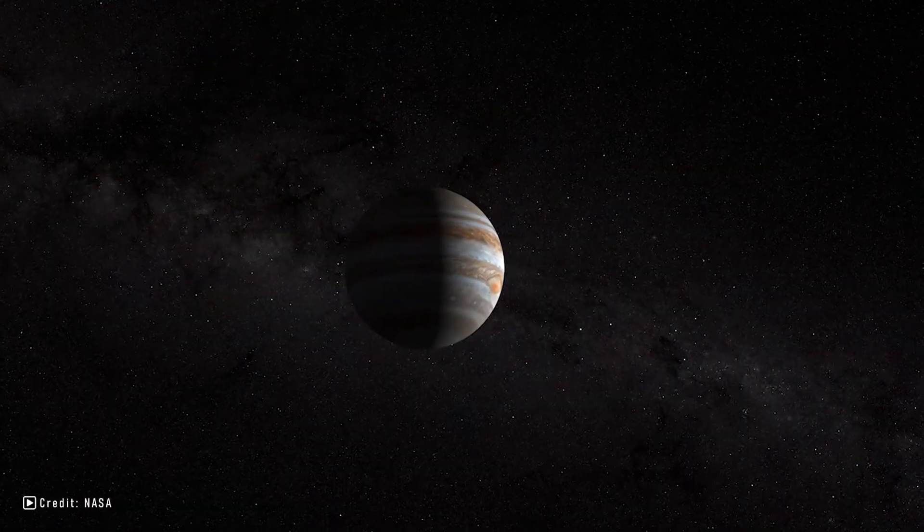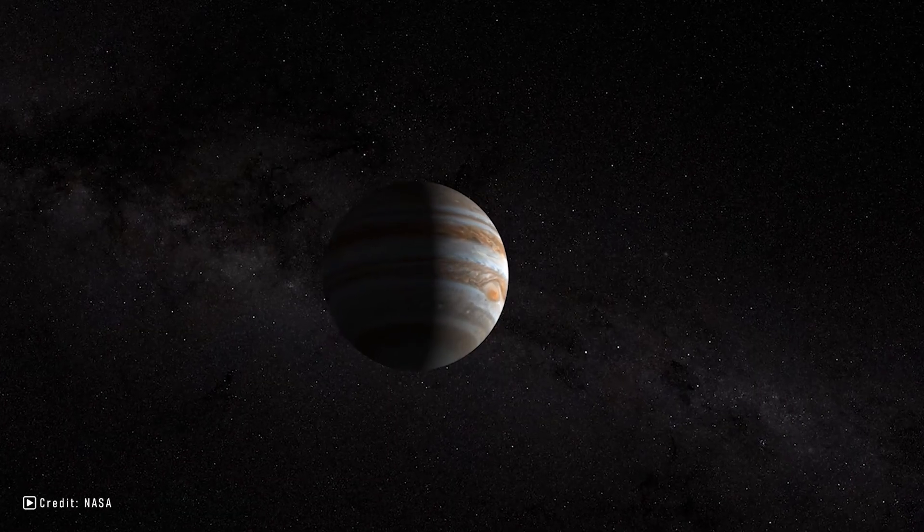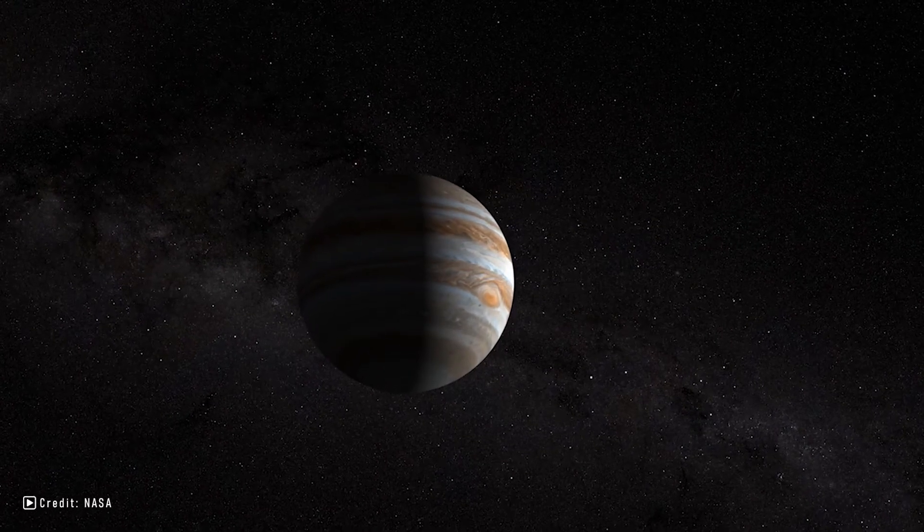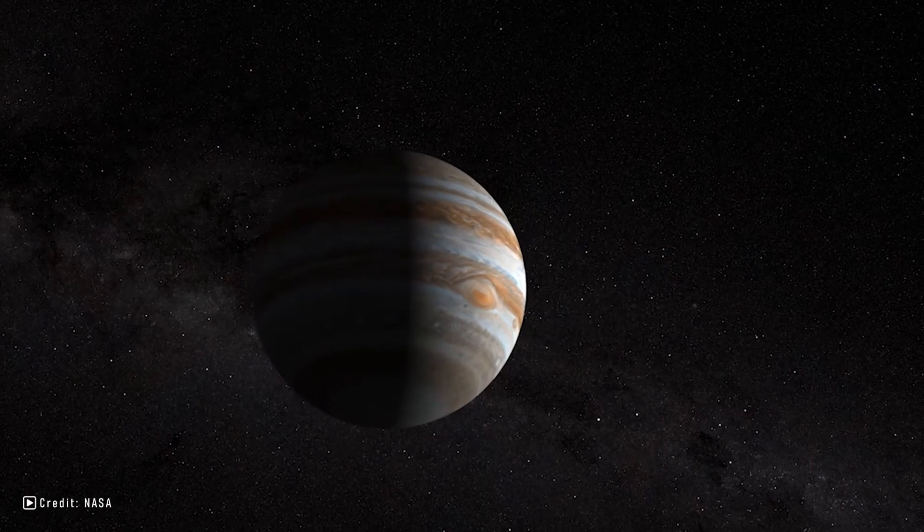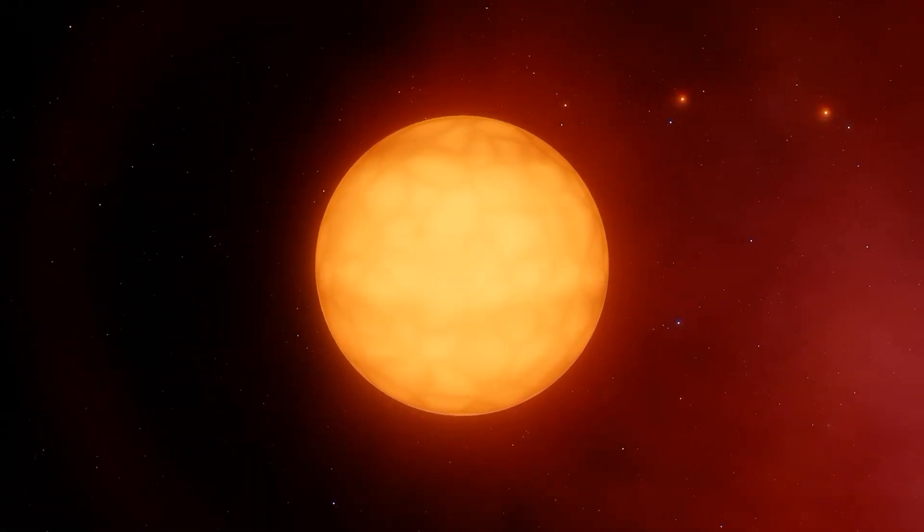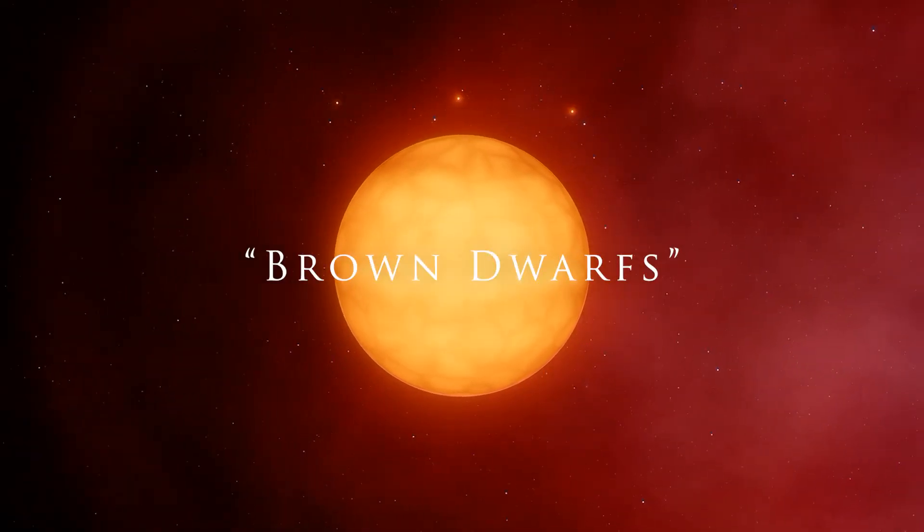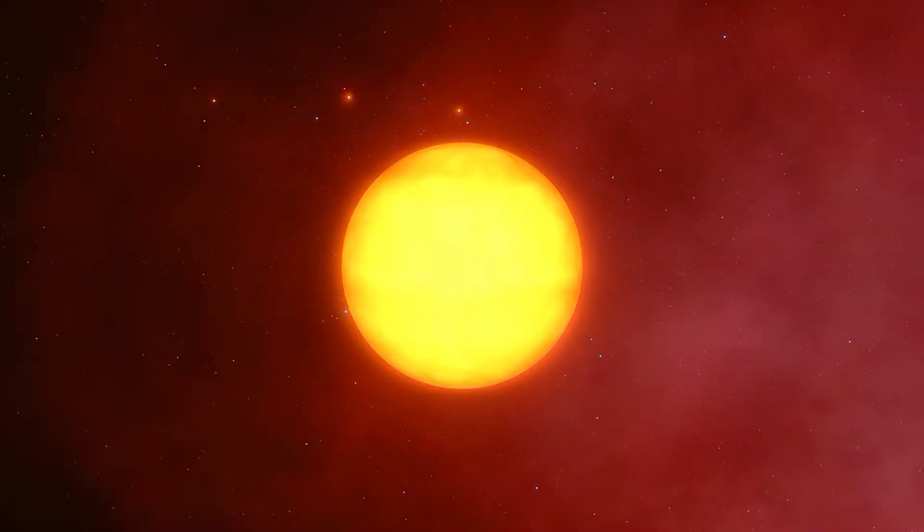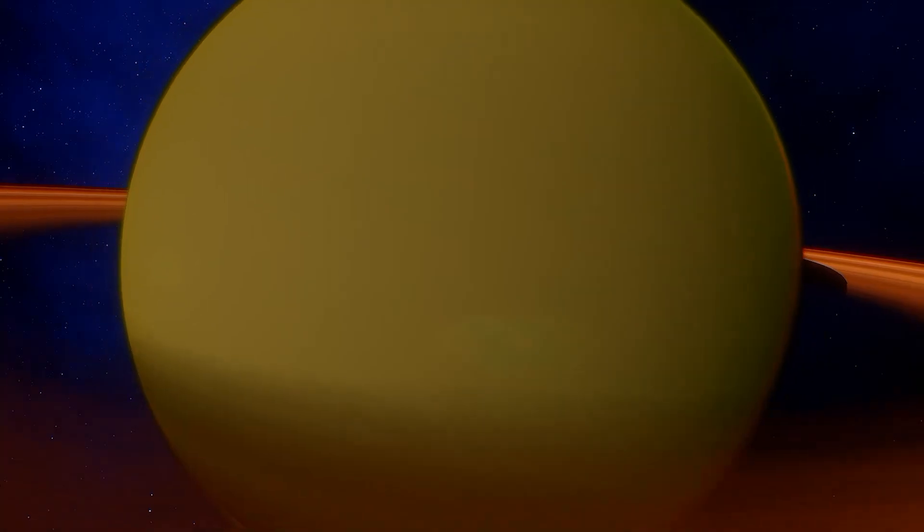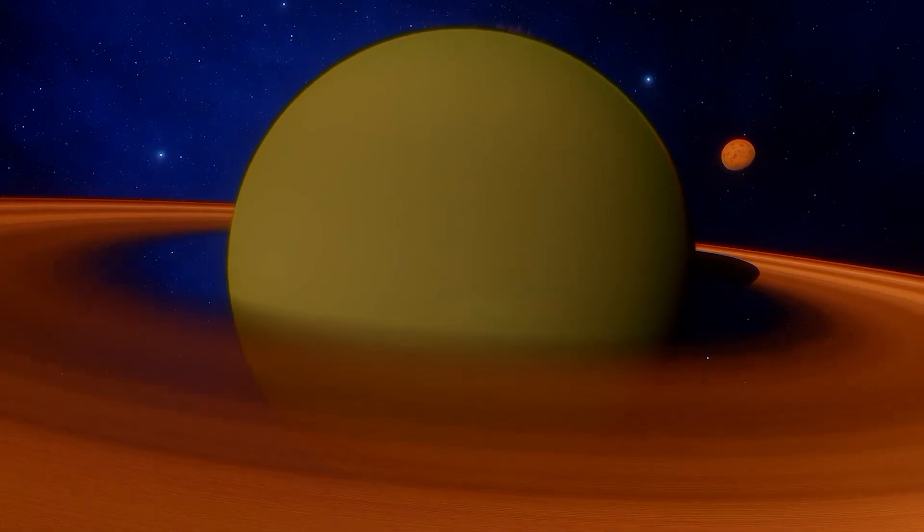Jupiter has a mass of 317 times that of the Earth. That may seem massive, but gas giants can be up to 13 times more massive than Jupiter, before they will engage in any sort of nuclear fusion, and can be labelled brown dwarfs. But even though they can be so much more massive, you'd be surprised to know that they actually don't get much bigger than Jupiter, under normal circumstances.